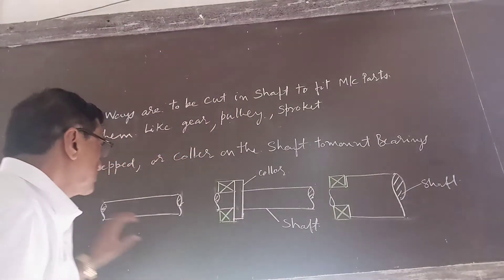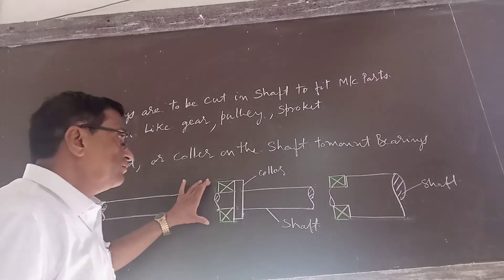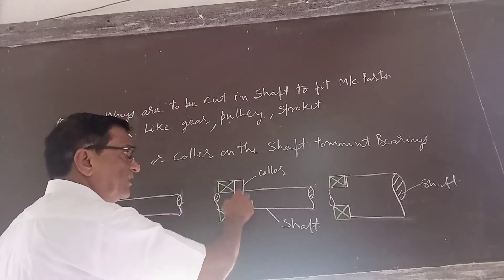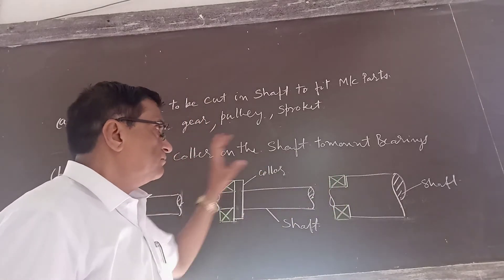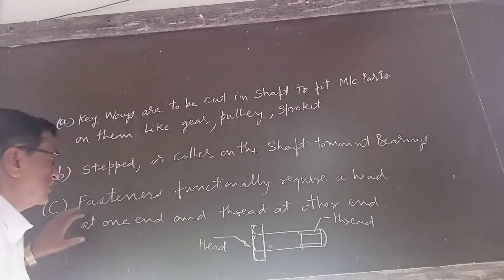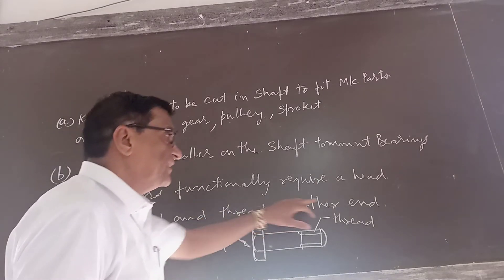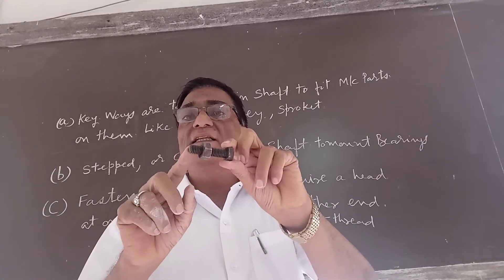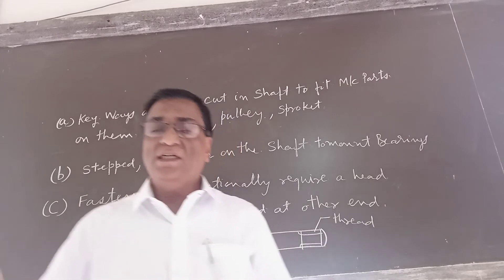Take the example of a shaft of uniform cross-section. We cannot always keep the shaft of uniform cross-section. Suppose we want to mount a bearing for support — in that case, to avoid axial movement, a collar or undercut is necessary. Also, take the example of a fastener: fasteners functionally require a head at one end and a head at the other end. You cannot force the designer to keep dimensions uniform throughout the section.